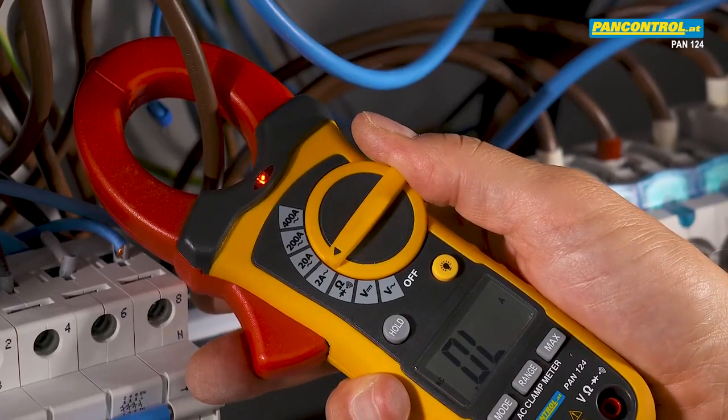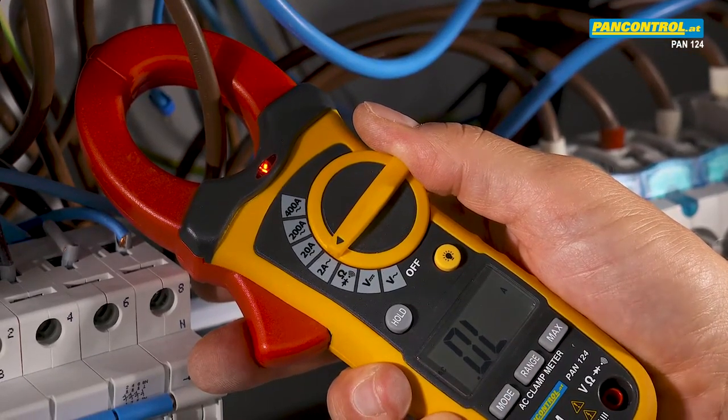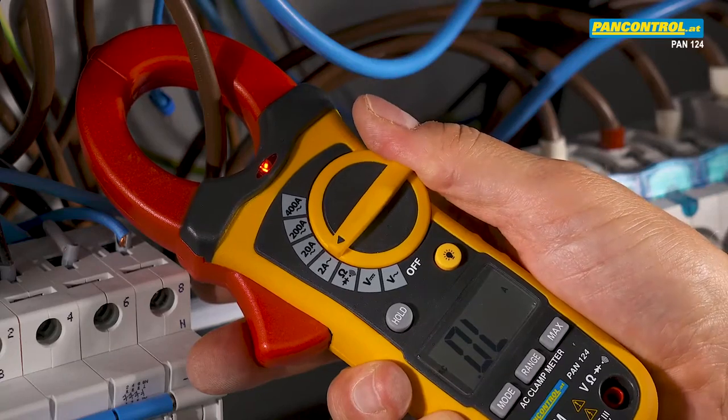When the selected range is too small, OL for overload appears in the display. In that case, the next higher range should be selected.